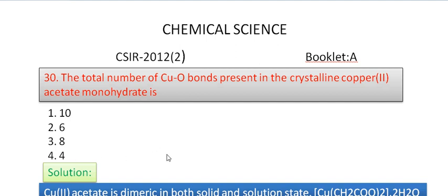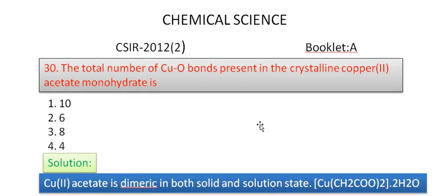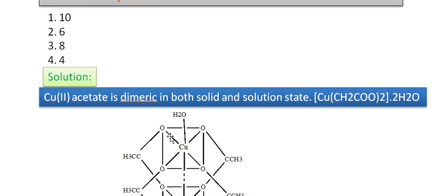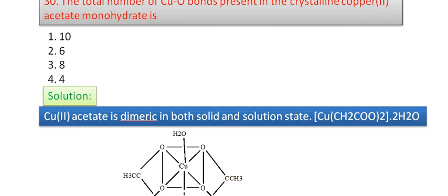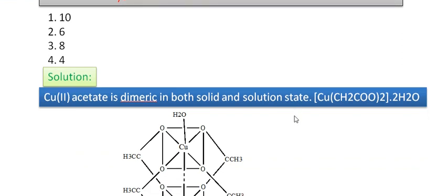Let me discuss the answer. The copper(II) acetate is dimeric in both solid and solution state, so it has a dimeric structure.